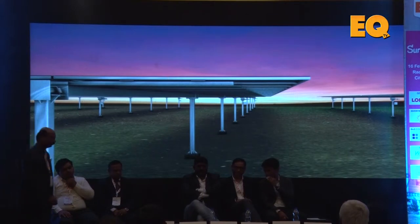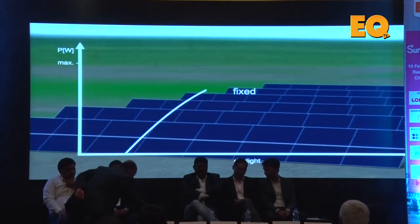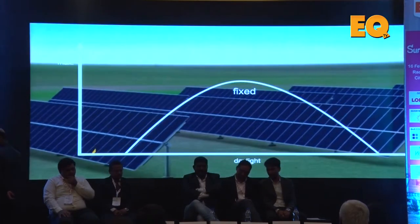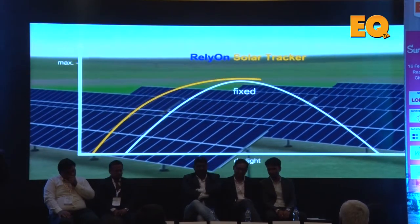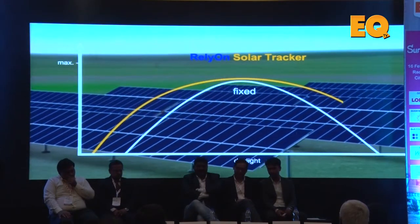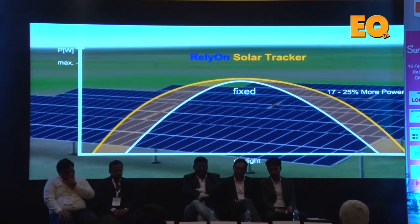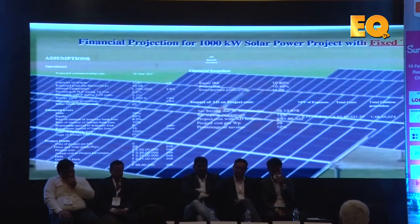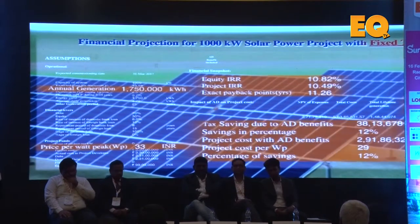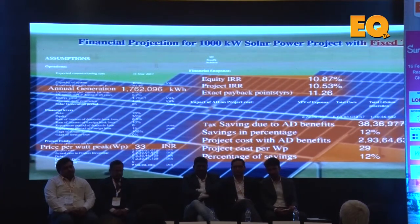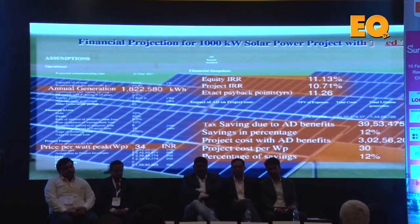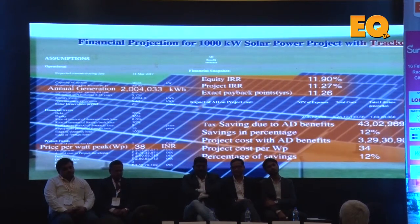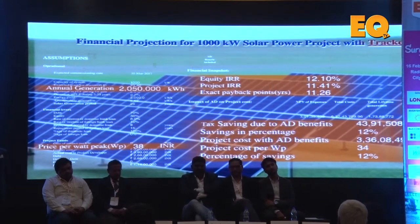The automated single-axis tracking system developed by Relyon Solar will enhance generation by 17 to 25% and improve the return on investment for the customer. With a reduction in levelized cost of power generation by as much as 10%, there is significant improvement in the return on investment to the customer.